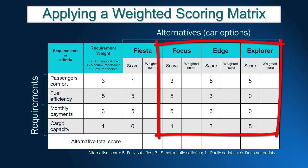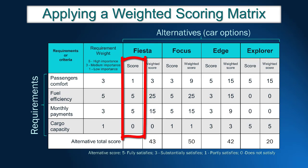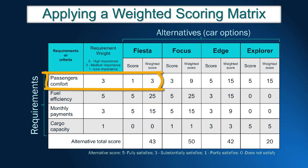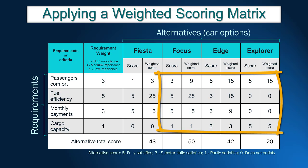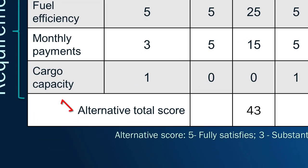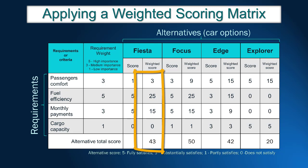After finishing the scoring for Fiesta, John needs to give scores for the remaining models. Once the scoring for all alternatives is finished, it is time to calculate the weighted score. The weighted score is calculated by multiplying the alternative score by the requirement weight. For passengers' comfort, Fiesta scored 1, so the weighted score is 3 × 1 = 3. For full efficiency, the weighted score is 5 × 5 = 25. The total weighted score is obtained by adding up all weighted scores. For Fiesta: 3 + 25 + 15 + 0 = 43.